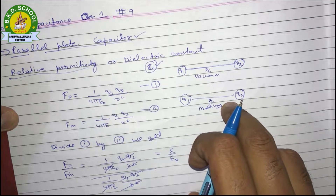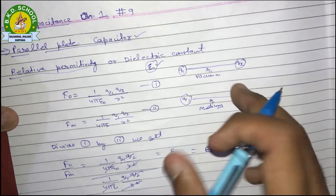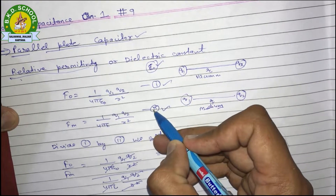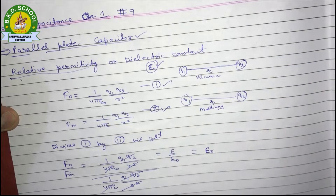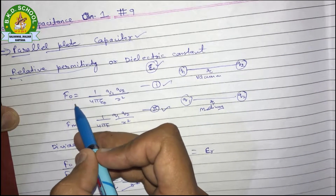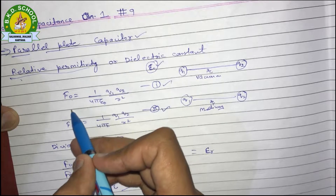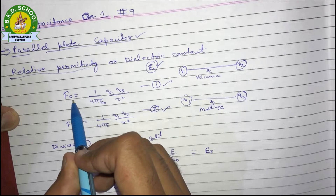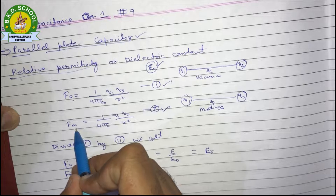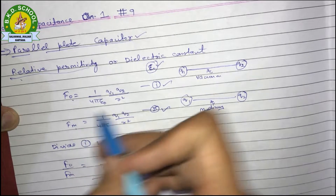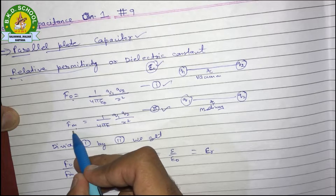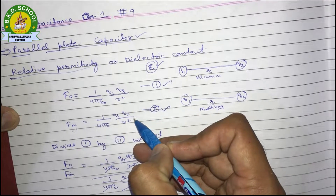I have written two equations for the interaction between two charges. In one condition I have written F0, meaning the force of interaction between two charges in vacuum. And Fm is the force of interaction between the same two charges at the same distance but in a medium.